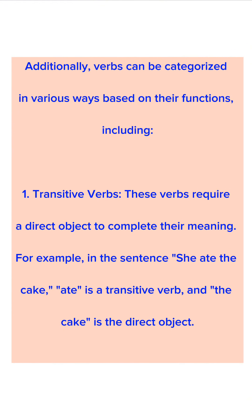Additionally, verbs can be categorized in various ways based on their functions, including: 1. Transitive verbs. These verbs require a direct object to complete their meaning. For example, in the sentence 'she ate the cake,' ate is a transitive verb and the cake is the direct object.